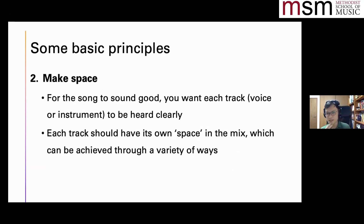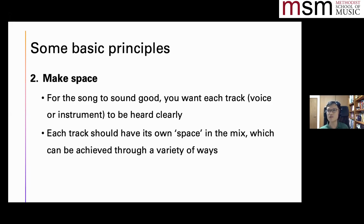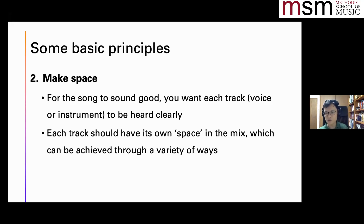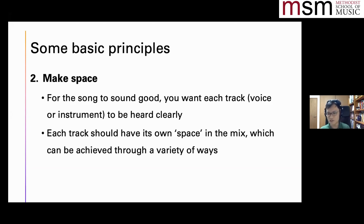The second principle is the making of space. If a mix consists of multiple instruments, the idea is for every instrument to be heard. For the song to sound good, you want each track to be discernible — not just discernible, but you want it to have its own space. This can be achieved through a variety of ways. Later when I talk about the components of the mixing process, things like EQ and compression will deal with how to achieve this space.